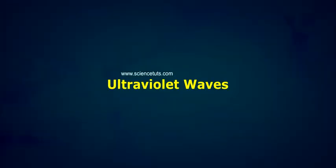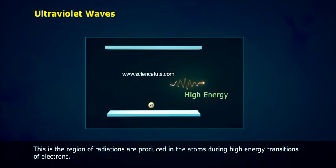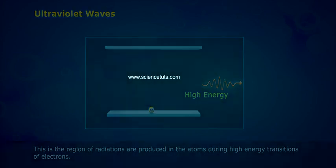Ultraviolet waves. This is the region of radiations produced in the atoms during high energy transitions of electrons.